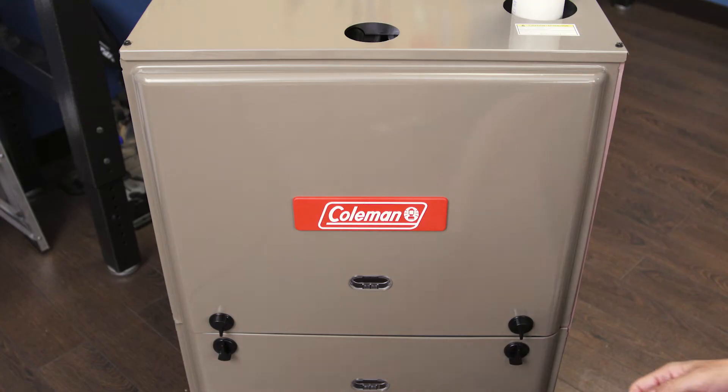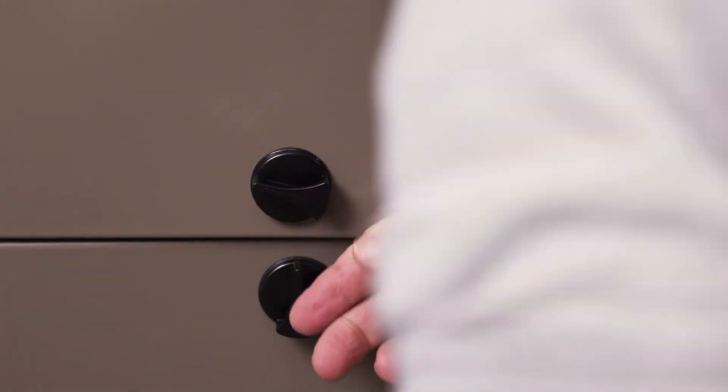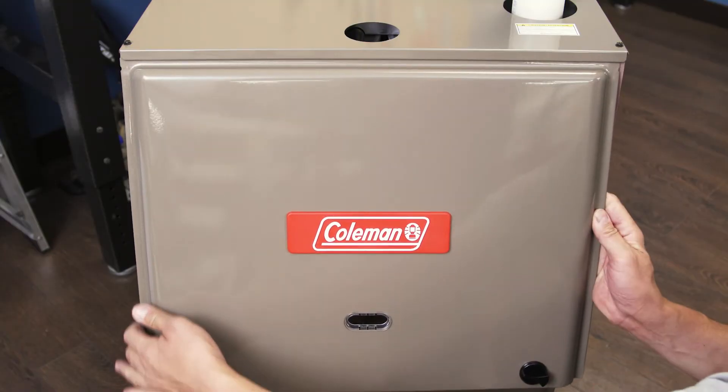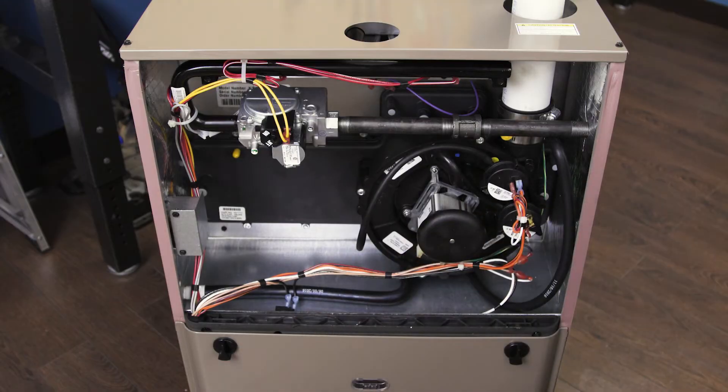Remove the top cover panel. Many furnaces use a push lock or twist lock, but some furnaces will require a screwdriver or a socket wrench.